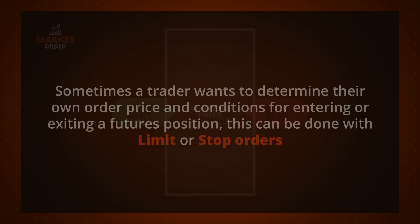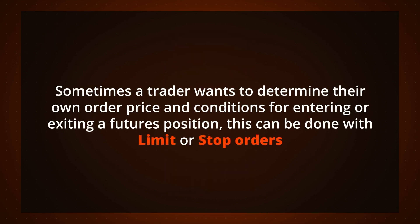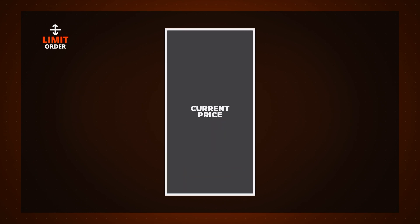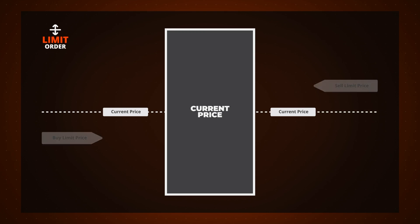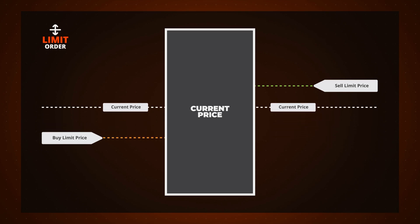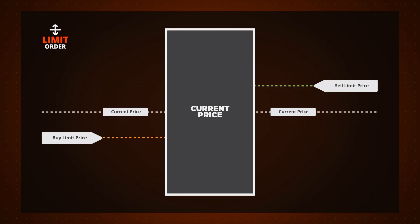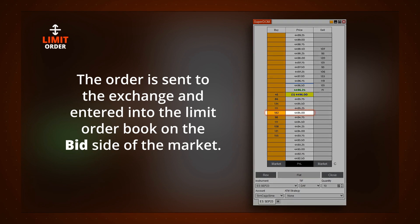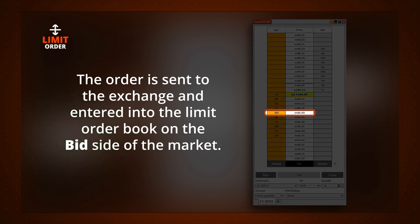Sometimes a trader wants to determine their own order price and conditions for entering or exiting a futures position. This can be done with limit or stop orders. Limit orders can be used to enter a new position or to exit an existing position with a profit. Limit orders are conditional orders that are filled when the current market price trades at or past the limit price set when the trade was submitted. When placing a buy limit order, the order price must be set below the current market price. Once you click buy, the order is sent to the exchange and entered into the limit order book on the bid side of the market.